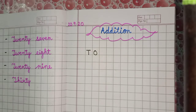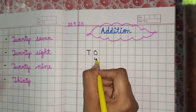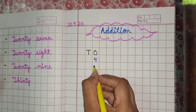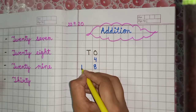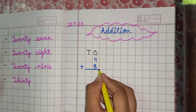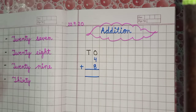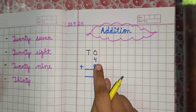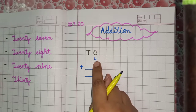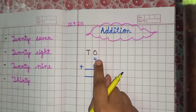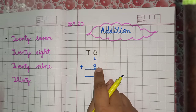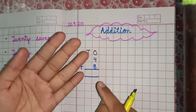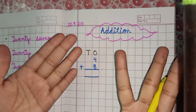Write four plus eight and put the sign of addition. You have to draw a line and write numbers by touching the line. Now keep four in mind and raise eight fingers: one, two, three, four, five, six, seven, eight.